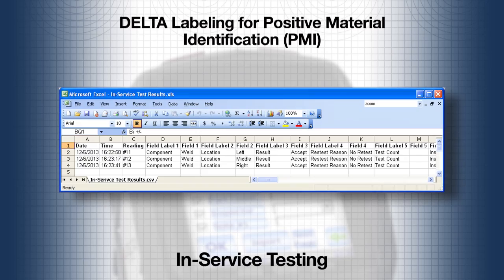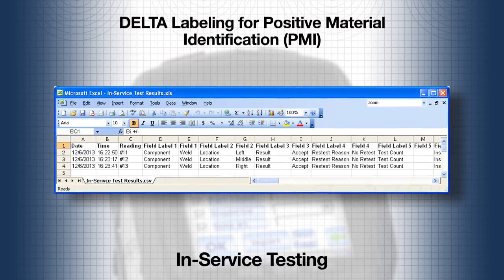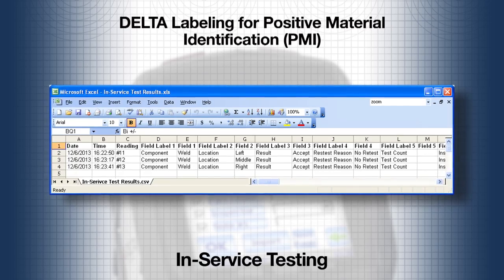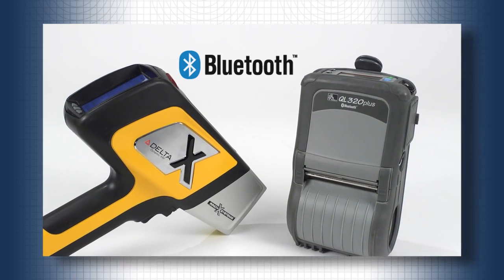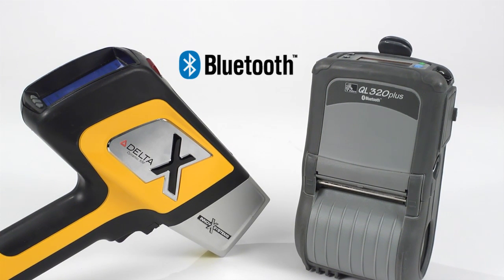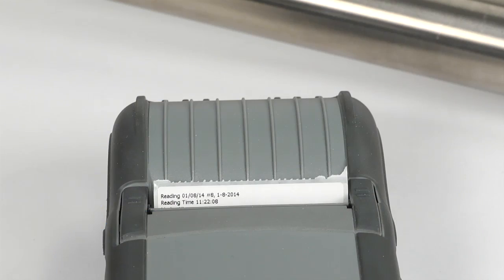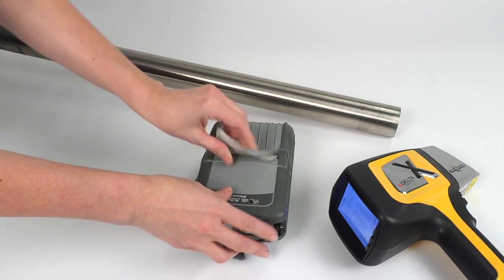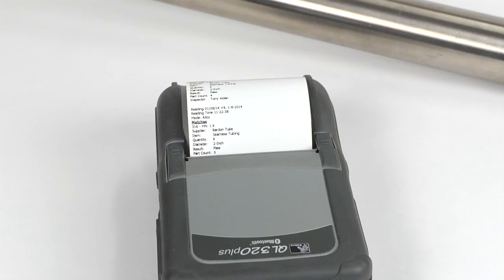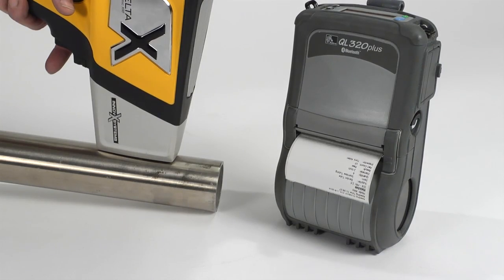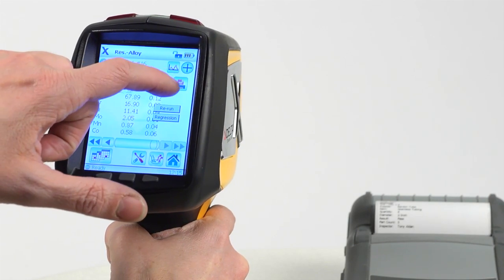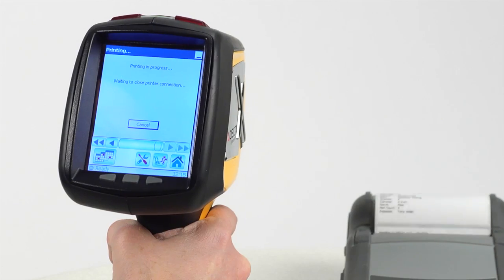The report, which can be used in any PMI software package, will show the labels and results of this testing sequence. In addition to creating a report from your test results, you can also print your test results. The Delta XRF analyzer connects wirelessly to a Bluetooth printer, which is sold as an accessory. You can print to a label to immediately identify components tested, or print to receipt-style paper to include with other documentation. You can print results as soon as the test is taken, or choose specific tests to print after testing is complete.